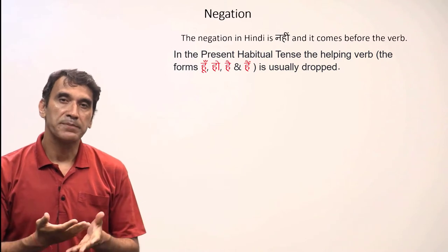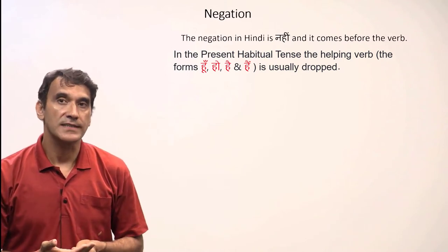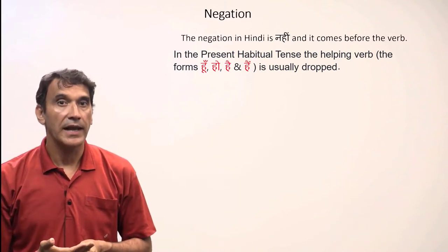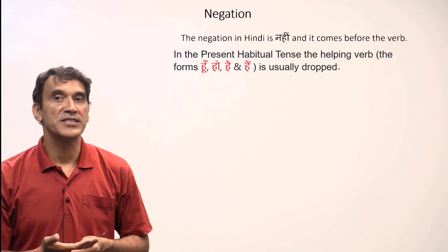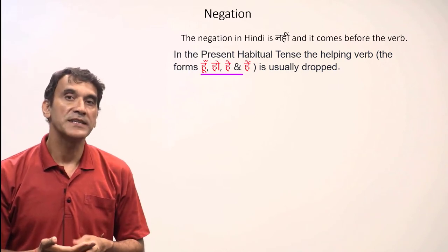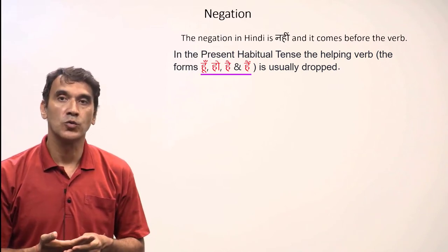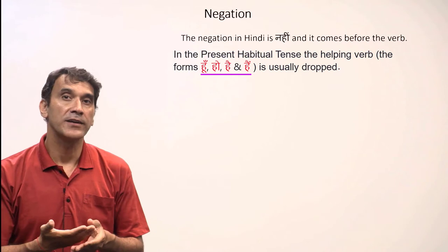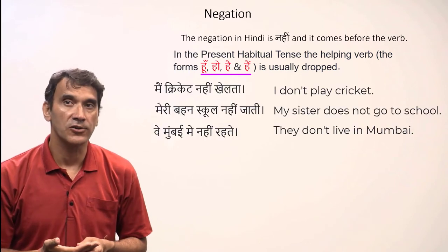In the present habitual tense, the negation comes before the habitual participle and the helping verb is usually dropped. That means the words 'hoon', 'hai', 'hai', 'ho' at the end of the sentence are dropped.